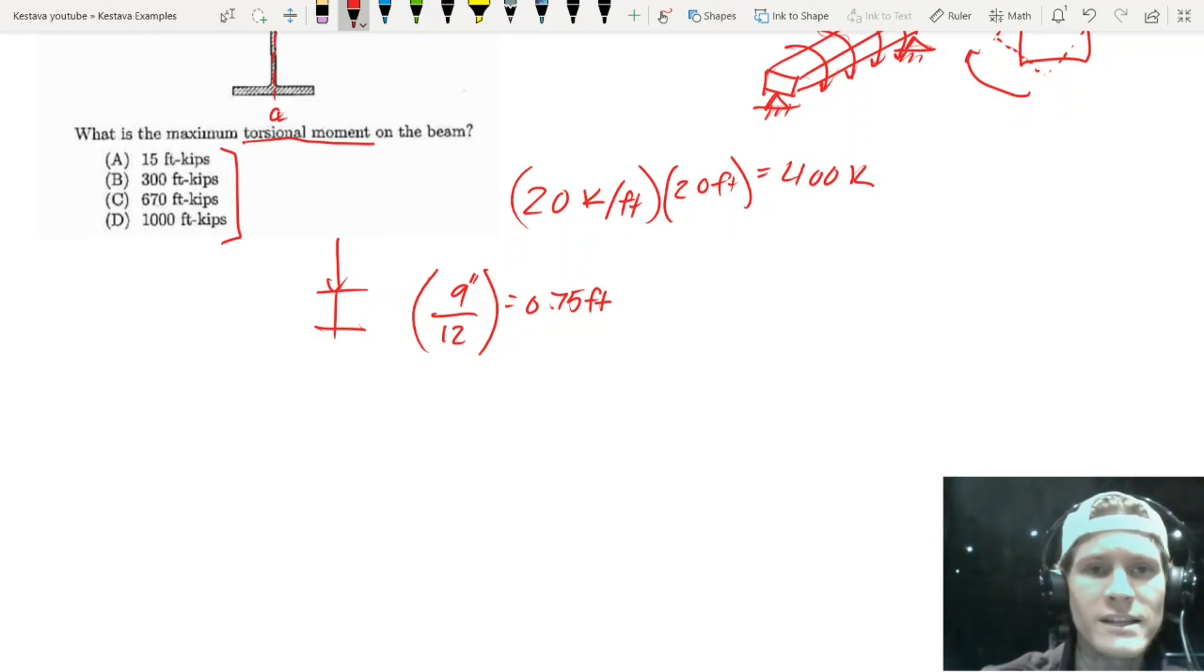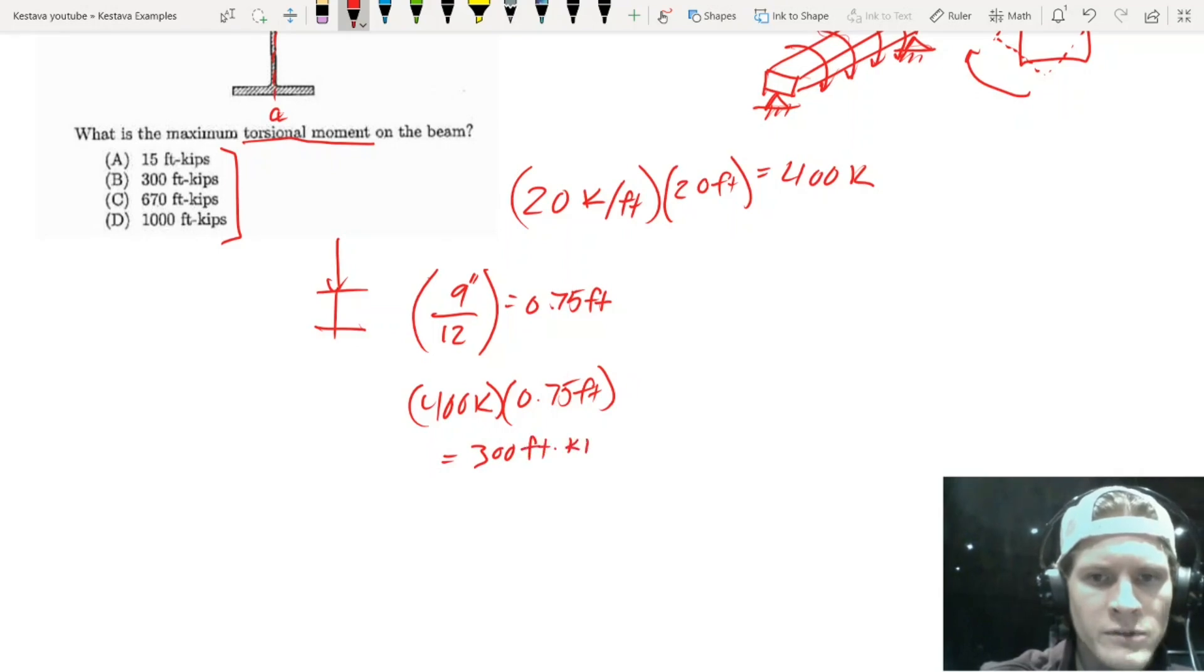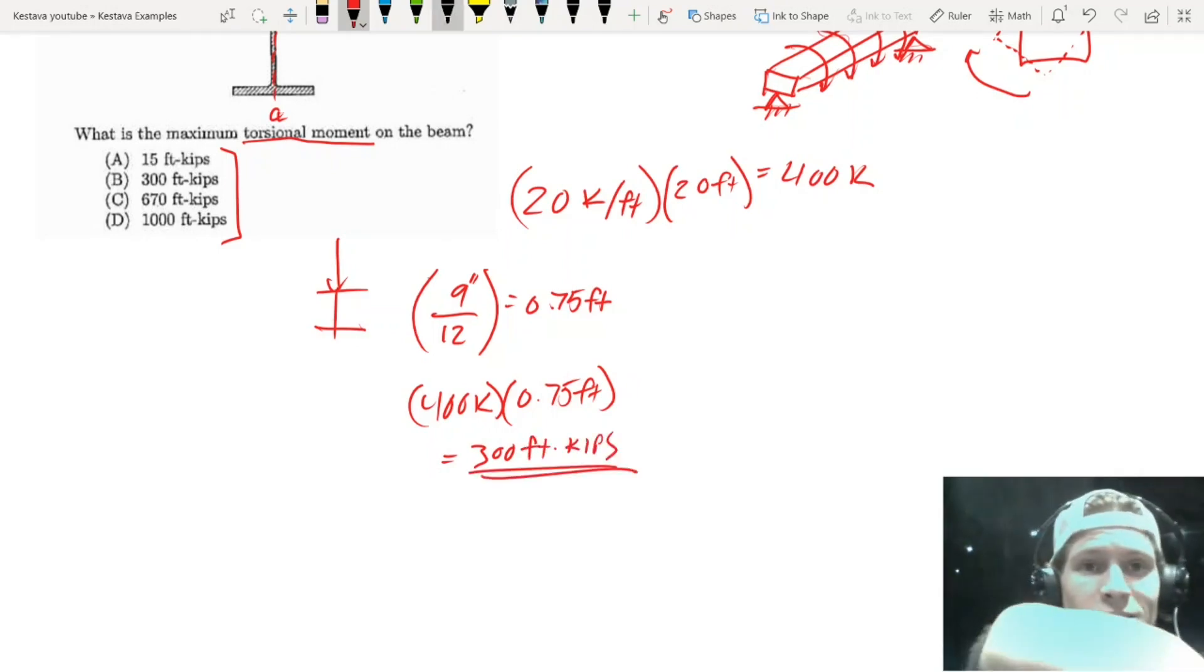And now the last thing is just force times length. I know, it's pretty straightforward. But for those who are unfamiliar with torsion, it might be a nice little starter pack. That is going to equal 300 foot kips. And right there, that's your answer. So let's go take a look.